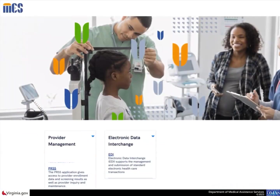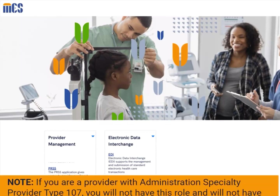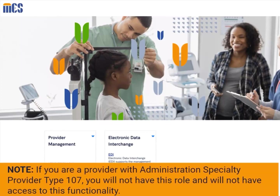When you are assigned the Provider Admin role in PRSS, you will have access to the EDI Service Center Authorization functionality. If you are a provider with Administration Specialty Provider Type 107, you will not have this role and will not have access to this functionality.